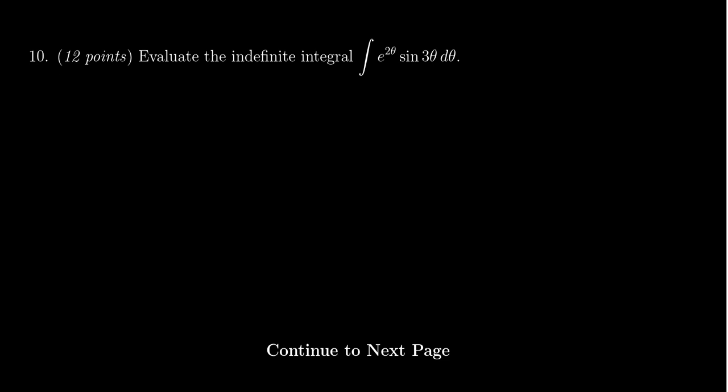The fact that I see this exponential times a sine function makes me think I want to use integration by parts — more specifically, integration by cycles. As you take derivatives or anti-derivatives of e to the two theta, you always get back e to the two theta with a changing constant multiple. Same thing with sine: the derivative or anti-derivative of sine always gives back a constant multiple of cosine, and doing that again gives a constant multiple of sine. So if I do integration by parts enough times, I'll cycle back to the original expression.